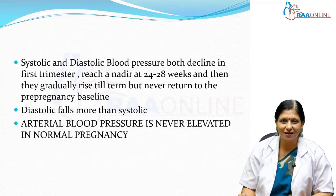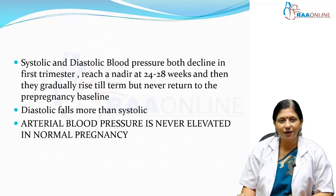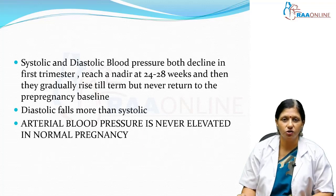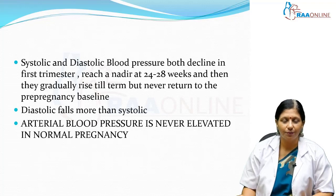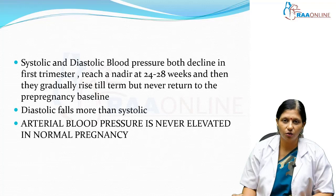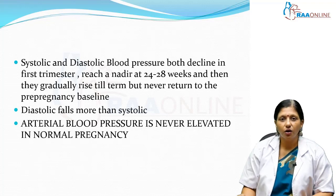Then they start a little rise, but never return to the pre-pregnancy level. So throughout the pregnancy, the blood pressure should be lower than in a non-pregnant individual. This fall is more in the diastolic pressure as compared to the systolic pressure. So normal pregnancy has a lower blood pressure compared to a non-pregnant individual.